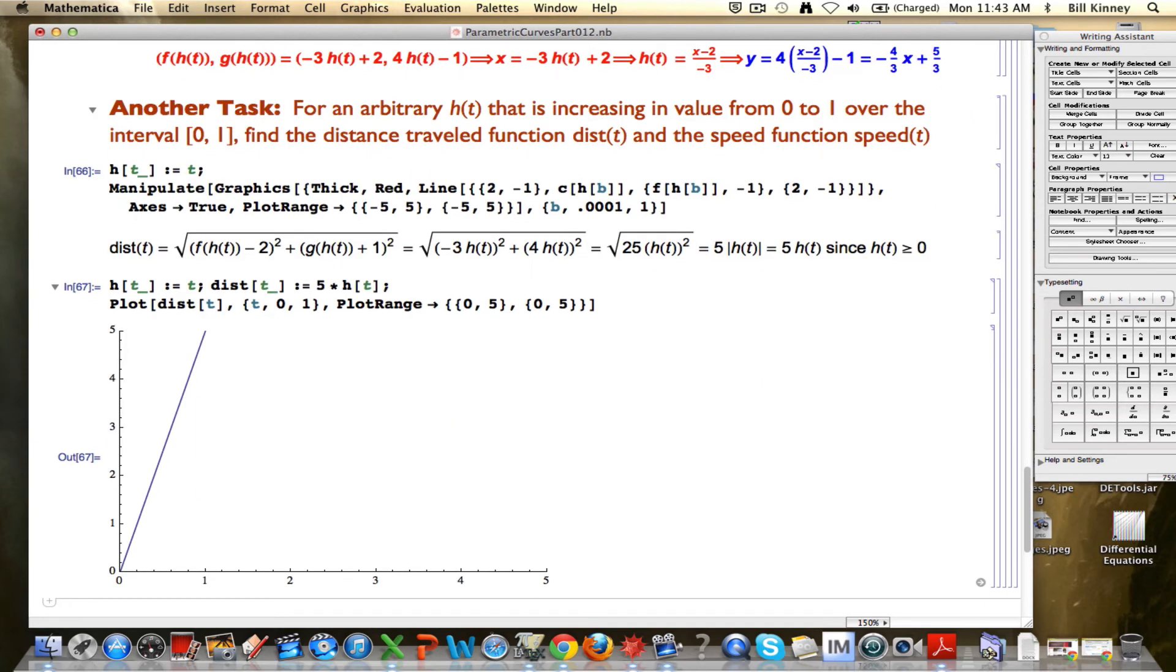This is the distance traveled function. It's linear in this case. Well, that makes sense, because h of t is the simple one, just a t. And therefore, the distance traveled function will be linear. You're going to be moving at a constant speed.